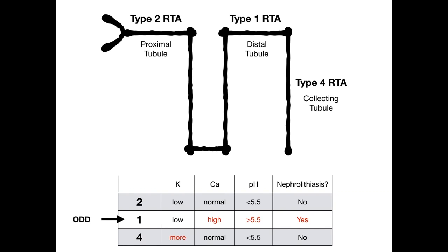One more thing for completeness — disease associations. Type 1 is classically associated with Sjögren's syndrome and rheumatoid arthritis. Type 4 is classically associated with lupus and sickle cell. A way to remember: say 'Sjögren' as 'Sjogren-1,' replacing the N with 1 since they sound alike, which reminds you it's associated with type 1. The S diseases — lupus and sickle cell — go with type 4. This is literally all you need to know. If you see anything else in question banks, they're being really nitpicky. This is 90% of what's important for RTAs.